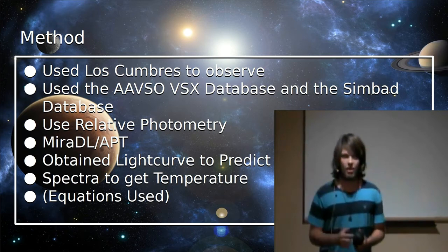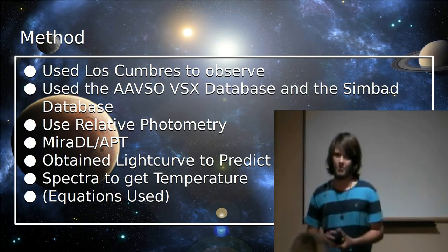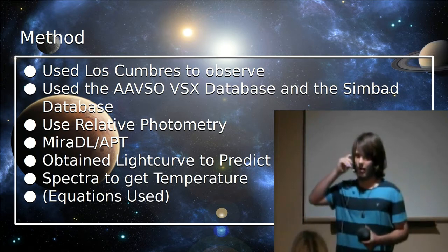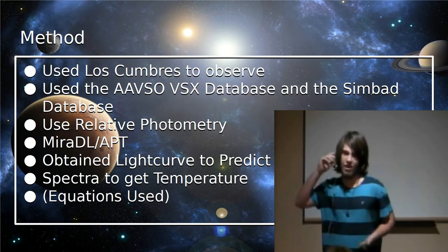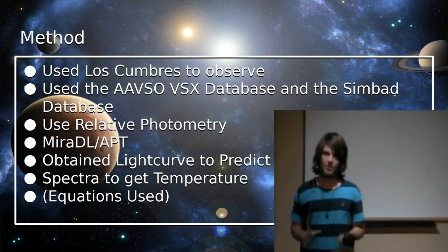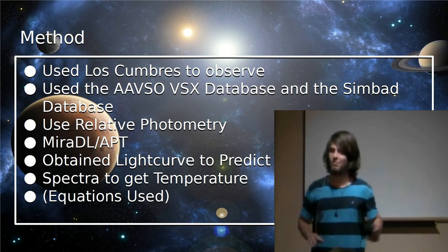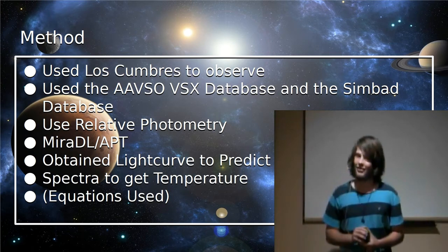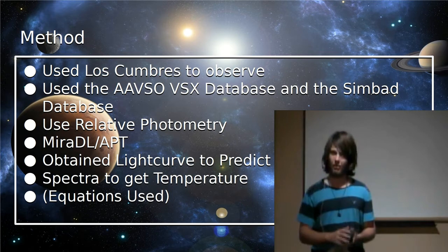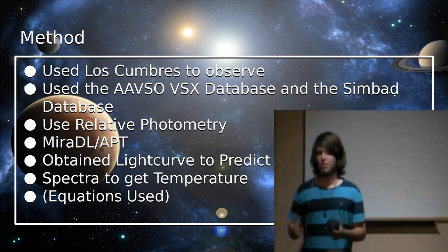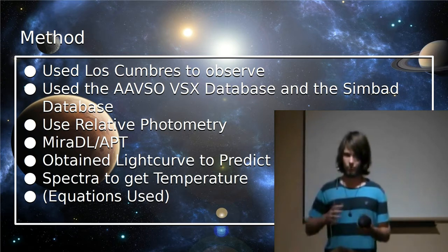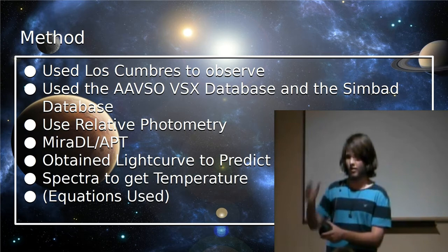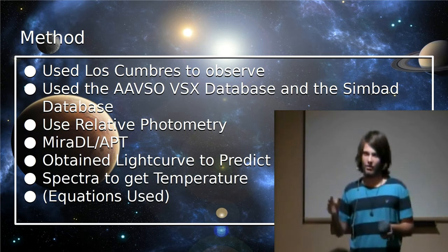So on top of this, I also used two databases. I used the AAVSO, or the American Association for Variable Star Observations VSX database. It's just a collection of variable stars, which binary stars are also because of the fact that they change in brightness. And there's other types of stars that are variable, but we're not focusing on those. I also used the SIMBAD database, which I basically just used to help me find my star when looking at the photos of it.